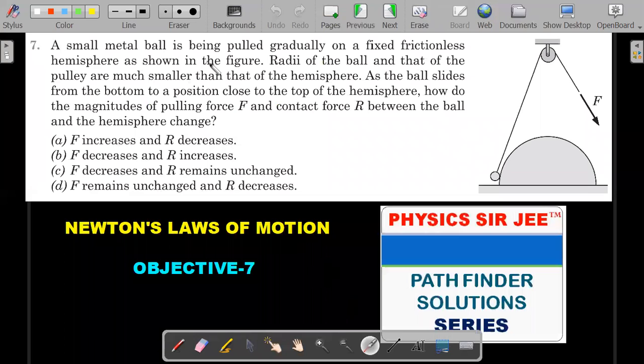A small metal ball is being pulled gradually on a fixed frictionless hemisphere as shown in the figure. Okay, so this hemisphere is fixed and this ball is being pulled using a pulley system. As you can see, right, gradually means this entire thing is being pulled very slowly. Radii of the ball and that of the pulley are much smaller than that of the sphere. So these two are very small. As the ball slides from bottom to the position close to the top of the hemisphere, how do the magnitudes of the pulling force F and contact force capital R between the ball and the hemisphere change?